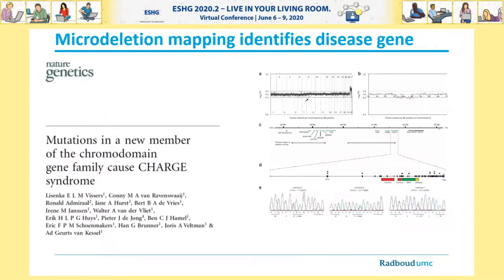CNV microarrays were probably the one technology that has really transformed molecular cytogenetics. First of all, as a disease gene identification tool — as shown in the example by my colleague Lee Senka-Fissers, who identified the underlying gene for CHARGE syndrome. Secondly, CNV microarrays really transformed the way we do diagnostics, and as such, we now routinely identify disease-causing pathogenic CNVs in 10 to 15% of cases.